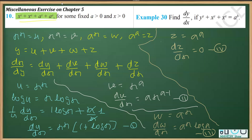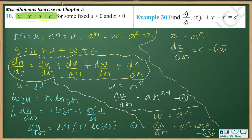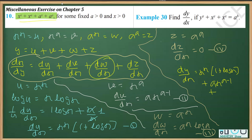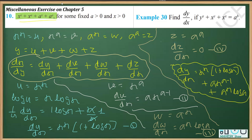Now we plug in all these values. So dy/dx = du/dx + dv/dx + dw/dx + dz/dx = x^x(1 + log x) + a·x^(a-1) + a^x · log a + 0. We may omit the zero, and this is our final answer.